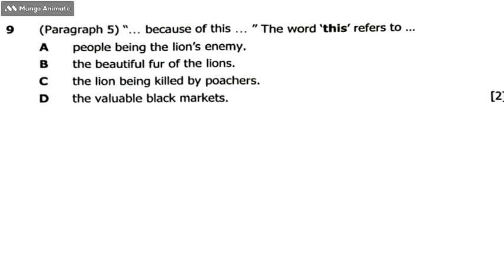Question 9 is as follows, and it's coming from paragraph 5. 'Because of this' — the way this refers to: A, people being the lion's enemy; B, the beautifier of the lions; C, the lion being killed by poachers; D, the variable black market.